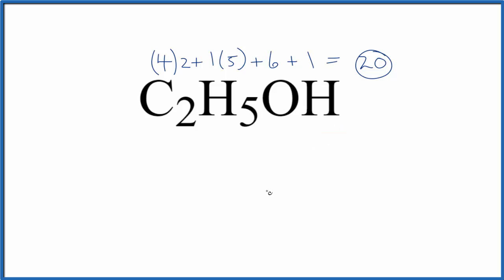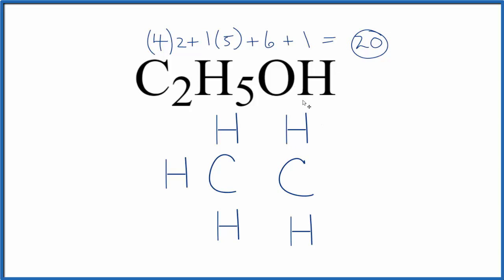So if we write the Lewis structure, we'll put the carbons on the inside. They are the least electronegative, and hydrogen does always go on the outside. So we have two carbons, and then we have five hydrogens. And then for the OH, we're going to keep that together. So we're just going to stick that out here.